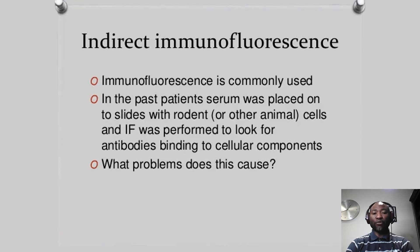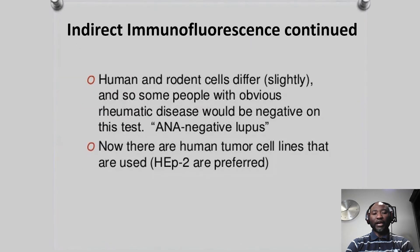In the past, animal rodent cells were used for this, but now we use human cells because animal cells would not necessarily suffice for detecting human autoantibodies. Now we have what's referred to as human epithelial cells — human tumor cell lines — which are commonly used. In the past, rodent cells would generate false negative results, which led to the advent of what was referred to as ANA-negative lupus. Now we know that most cases of lupus tend to be ANA positive and strongly positive, as lupus is regarded as the stereotypical seropositive disease.